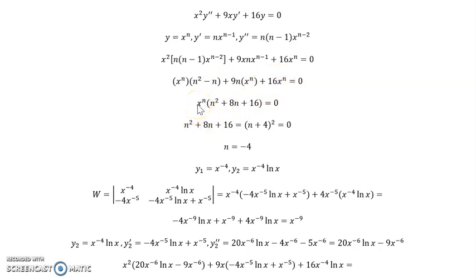x to the n cannot be 0, at least not all the time. And so we obtain the condition on n to be n equals negative 4. So our polynomial here is a perfect square, and so we only get one solution.